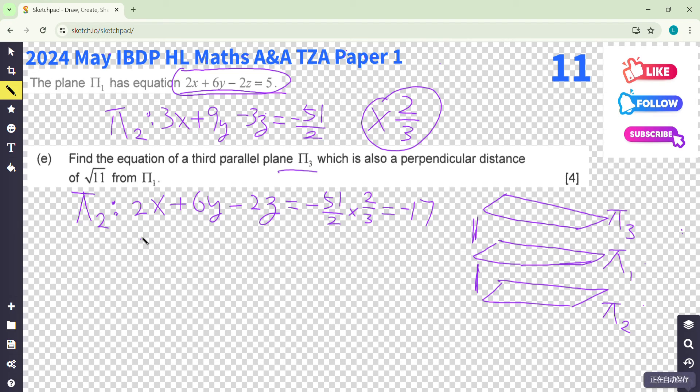So I expect π_V should be the same, right? The same coefficient because they are parallel. So it should be 2x plus 6y minus 2z equals... But what equals what? Think about the same distance. You can think about because they have the same normal vector.